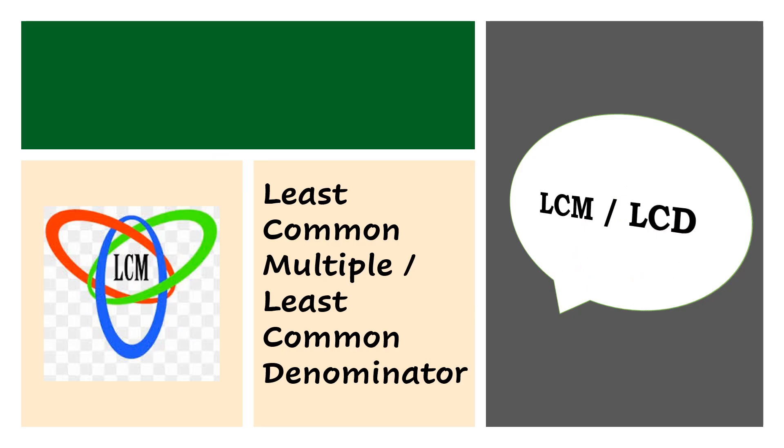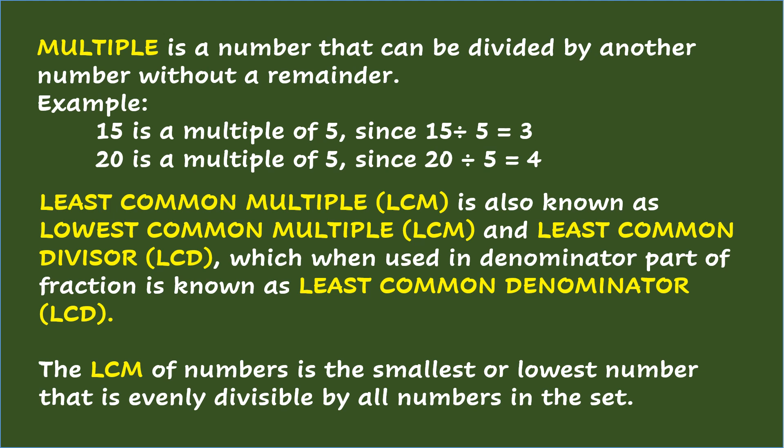Least Common Multiple. Least Common Denominator. A multiple is a number that can be divided by another number without a remainder. For example, 15 is a multiple of 5 since 15 divided by 5 equals 3. 20 is a multiple of 5 since 20 divided by 5 equals 4.